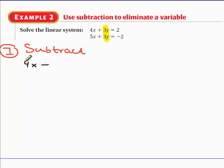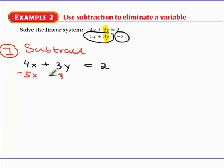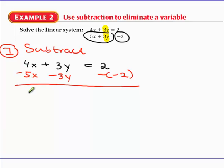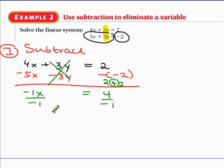Take the first equation and instead of adding, subtract. You have to be very careful — you're subtracting 5x, subtracting 3y, and then subtracting a negative 2. We get 4x minus 5x = negative 1x. Negative 3y and positive 3y eliminate. Then 2 minus negative 2 turns into 2 plus 2 = 4, because minus a negative gives you a plus. Solving gives x = negative 4.